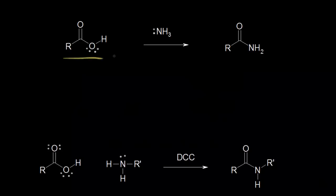If you start with a carboxylic acid and add something like ammonia to it, you might think that the ammonia would function as a nucleophile — attacking and losing the OH to form an amide as your product. However, this is not what happens at room temperature.